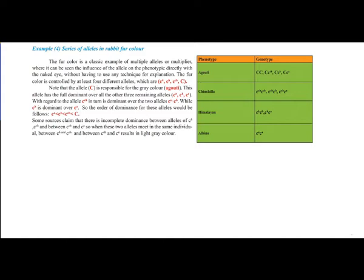The fur color is controlled by at least four different alleles in rabbits: C (agouti, gray), C^a (albino), C^H (Himalayan), C^ch (chinchilla), and capital C (agouti). These four alleles represent a series of multiple alleles at a single locus.